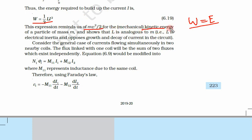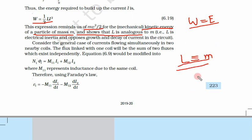If you recall the formula for kinetic energy, it is ½mv². The formula ½Li² is very similar. Here L is analogous to mass m. Mass is the property that produces inertia; self-inductance is the property that produces an effect similar to inertia. So L is electrical inertia — it opposes the growth and decay of current in a circuit.